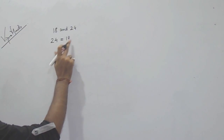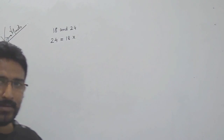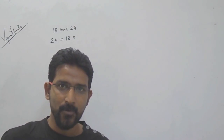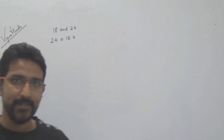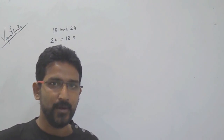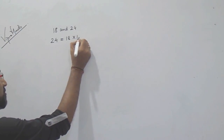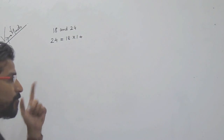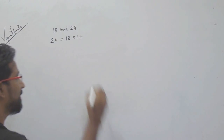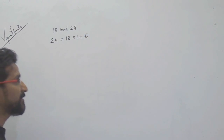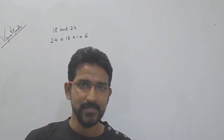So 24 equals divisor into quotient plus remainder. 18 into 1 is 18, which is smaller than 24. 18 into 2 is 36, which is greater than 24, so we take 1. So 24 equals 18 into 1 plus remainder, and 24 minus 18 gives remainder as 6. We have to carry out this process till we get the remainder as 0.